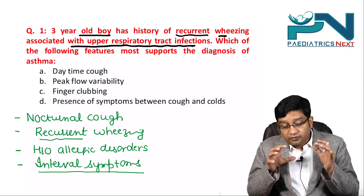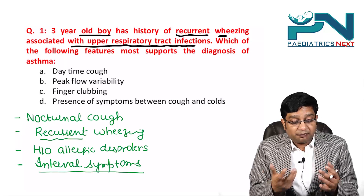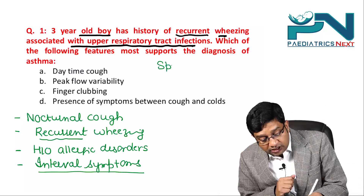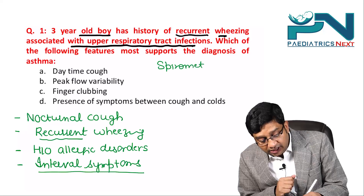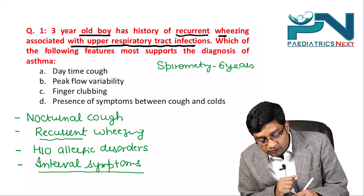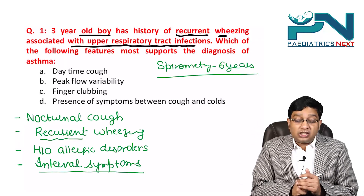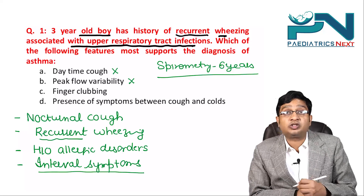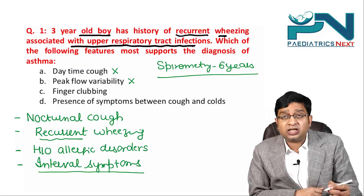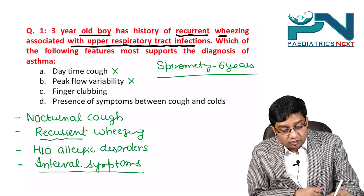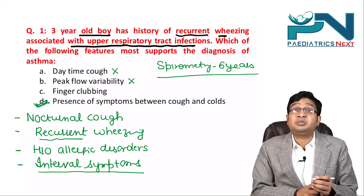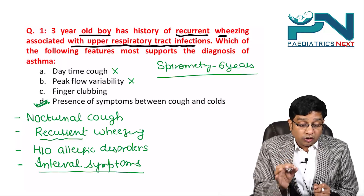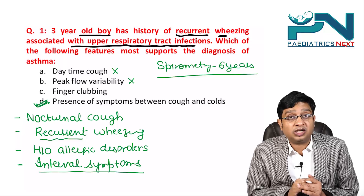In this question, most answers will say peak flow variability. But remember, spirometry can be done in a child only at the age of 6 years — so this is a tricky question and peak flow variability is ruled out. Daytime cough is wrong; it should be nocturnal cough. Finger clubbing can be seen in many conditions. The right answer is presence of symptoms between cough and cold episodes — that is the interval symptoms — which supports the diagnosis of asthma.